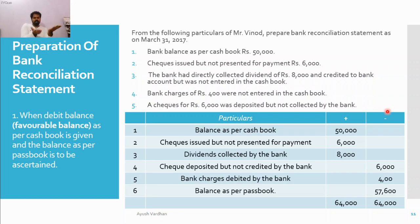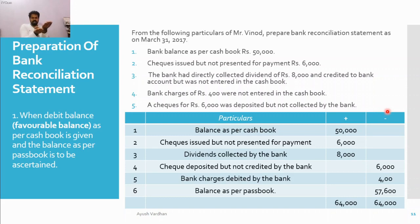Second — dividend collected by the bank. Cash book and pass book are equal. Suddenly, a dividend payment of 8,000 rupees comes directly into the bank account. Bank is authorized to collect that on your behalf, so cash book is at zero while pass book goes to plus 8,000. Pass book is more than cash book, so target pass book is in the positive. We do an 8,000 rupees positive entry. Next, check deposited but not credited by the bank — we make a negative entry of 6,000 in the BRS. Then for bank charges of 400 rupees, pass book goes to minus 400 while cash book is zero, so that is also a negative entry.